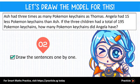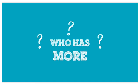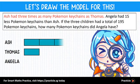Let's start with the first sentence: Ash had three times as many Pokemon keychains as Thomas. Whenever we are comparing two people, we have to be clear who has more. The sentence of Ash having three times as many Pokemon keychains as Thomas means that if Thomas has one unit representing the number of keychains he had, Ash would have three multiplied by one unit, which is three units.